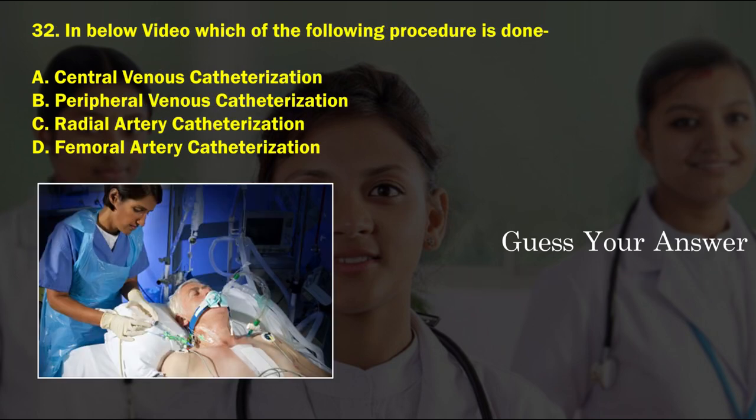In the below image, which of the following procedures is done? Option A: central venous catheterization, option B: peripheral venous catheterization, option C: radial artery catheterization, option D: femoral artery catheterization.